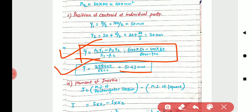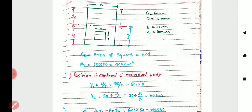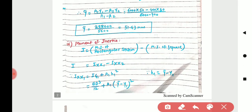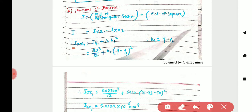Next, we calculate the moment of inertia. There is one rectangular section and one hollow square section. We find the moment of inertia of each separately, then subtract: I = Ixx1 − Ixx2. Using the parallel axis theorem: Ixx1 = Ig1 + A1·h1².